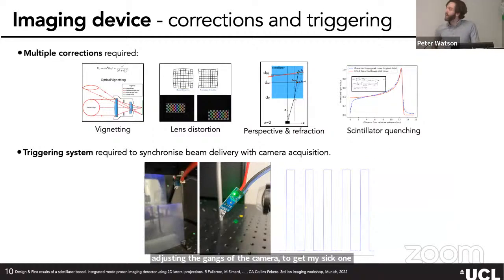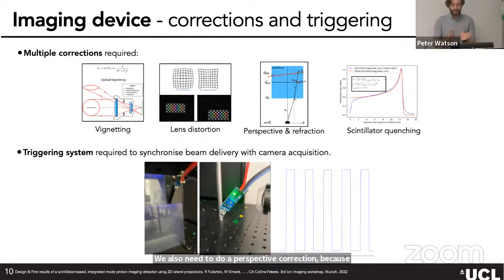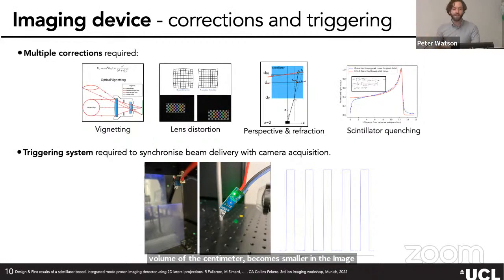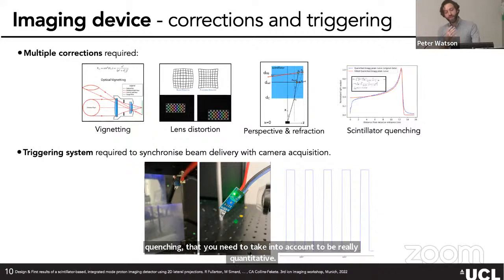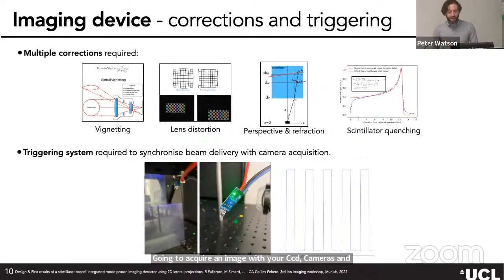Working with optical photons requires many corrections: optical vignetting, lens correction, perspective correction because the CCD field of view gets larger with depth, refraction correction, and scintillator quenching correction to be quantitative. We also needed to develop a triggering system to synchronize beam delivery with camera acquisition — ensuring that whenever the beam is shot from the source, the CCD cameras acquire an image at exactly that time.